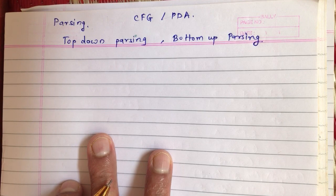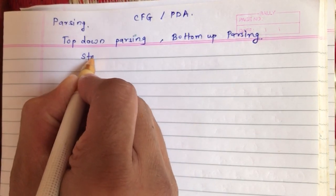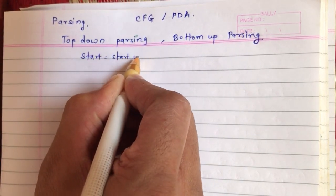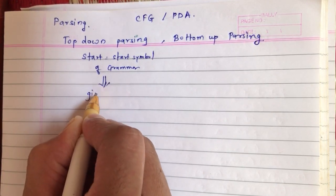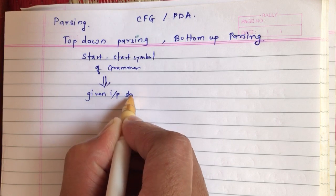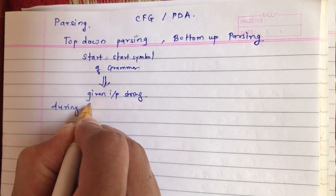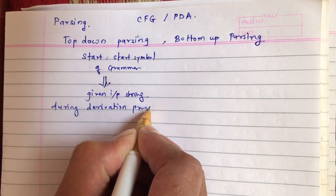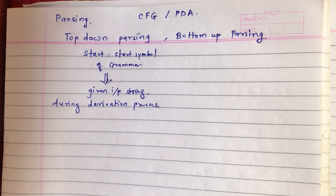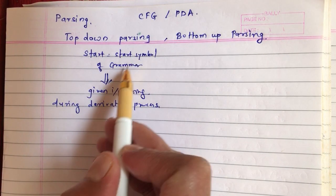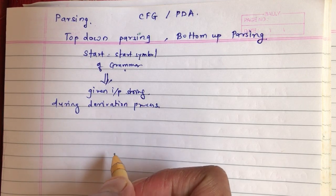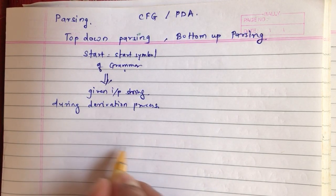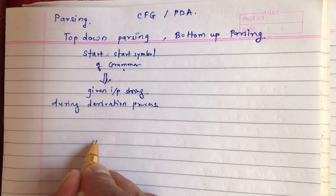The difference lies in the name itself. Top-down indicates that in this type of parsing process, you start from the starting symbol of the grammar and you proceed towards the given input string during the derivation process. Whenever you are solving the grammar for acceptance, you write a derivation. If you start from the starting symbol of grammar and proceed towards the given input string, we call that process top-down parsing. We can illustrate that with a tree as well.